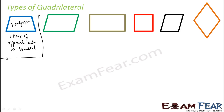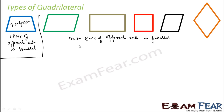If both pairs of opposite sides are parallel, then it is called a parallelogram. Both pairs are parallel in all of these figures. So both pairs of opposite sides are parallel — all these are called parallelogram.